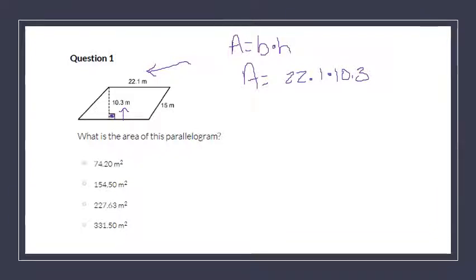So 22.1 times 10.3. You can use your handy dandy calculators to multiply 22 and 1 tenth times 10 and 3 tenths.